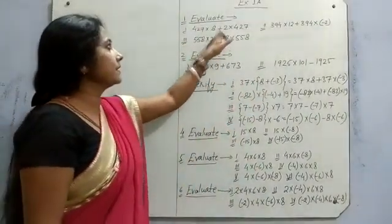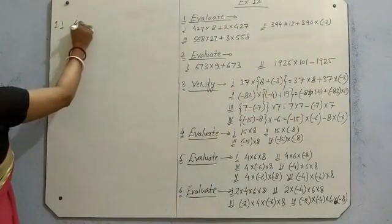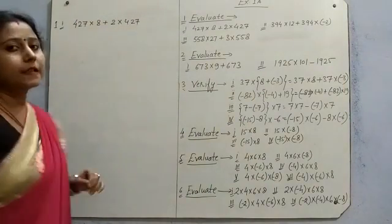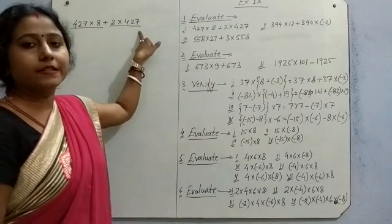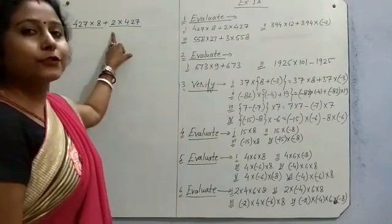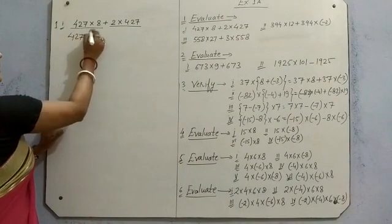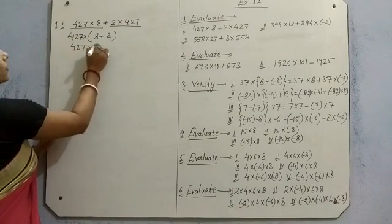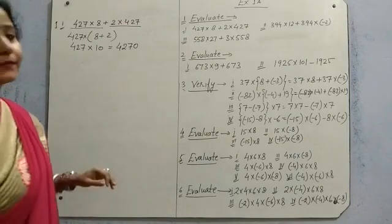In first one, evaluate this one. First, 427 into 8 plus 2 into 427. You can see two terms are there. 427 into 8 and 2 into 427. Yesterday I have told you about distributive property. So you can see here distributive property we can use. 427, we can take common and inside 8 plus 2. So this will become 427 into 10 and easily we can get 4270. This is the answer.